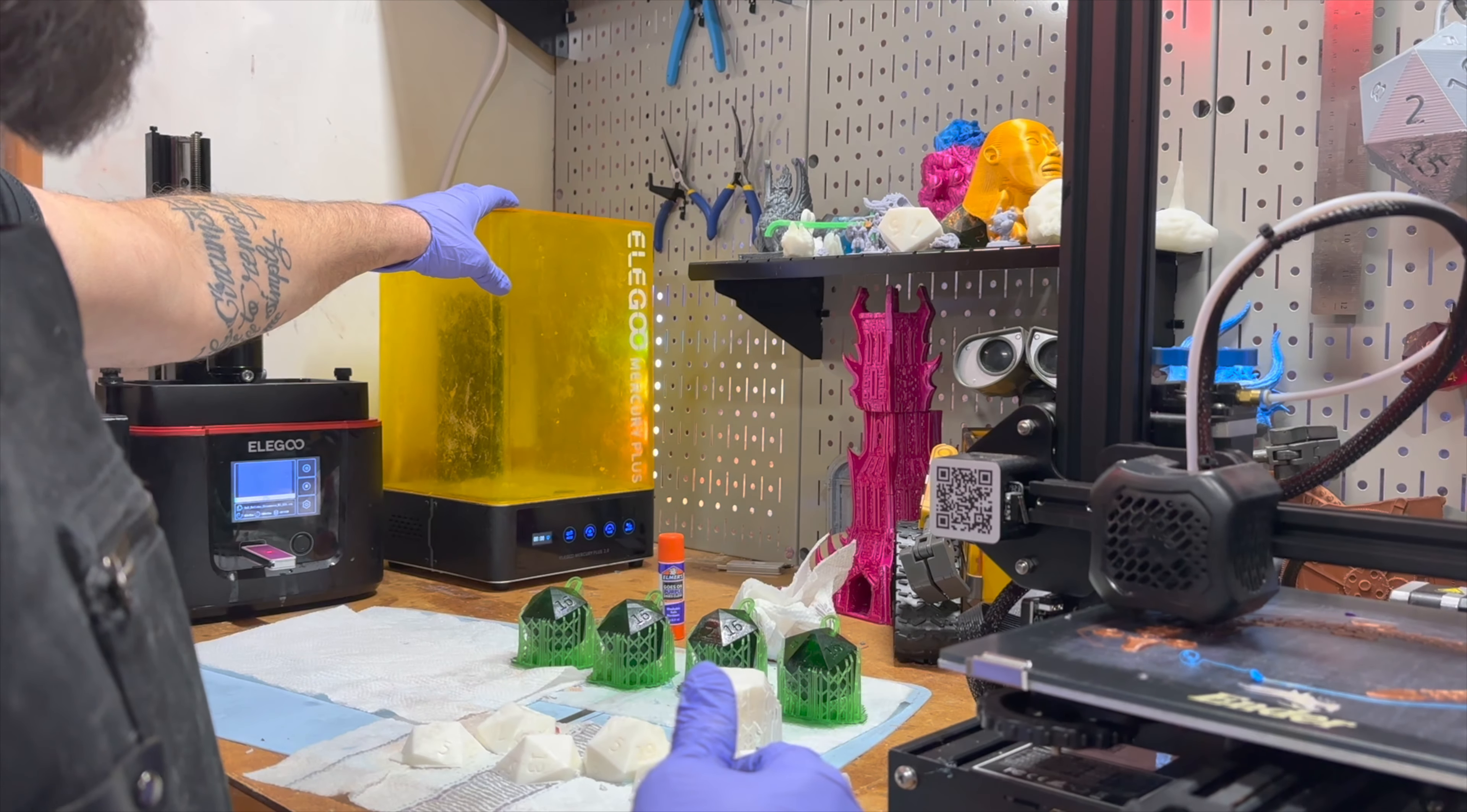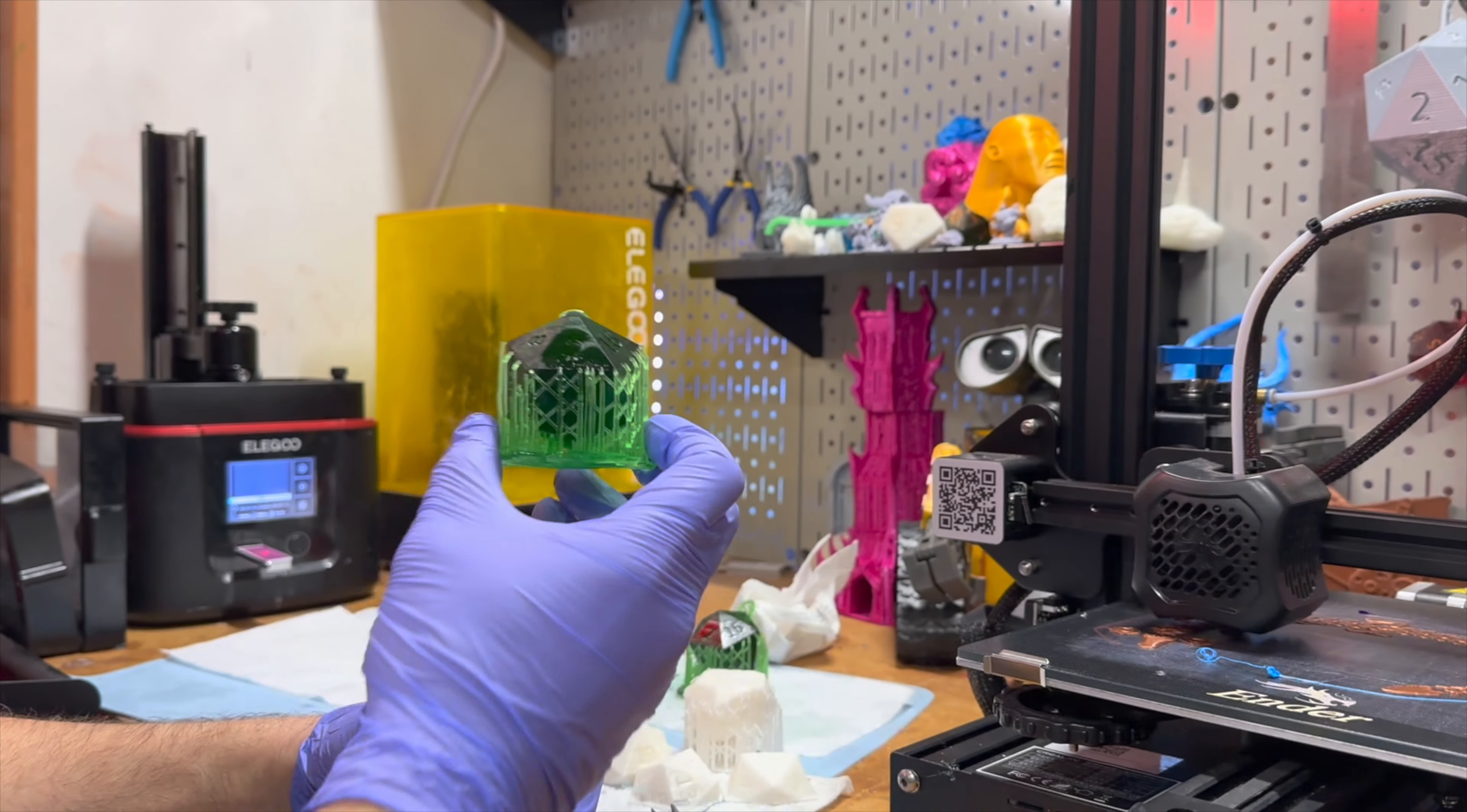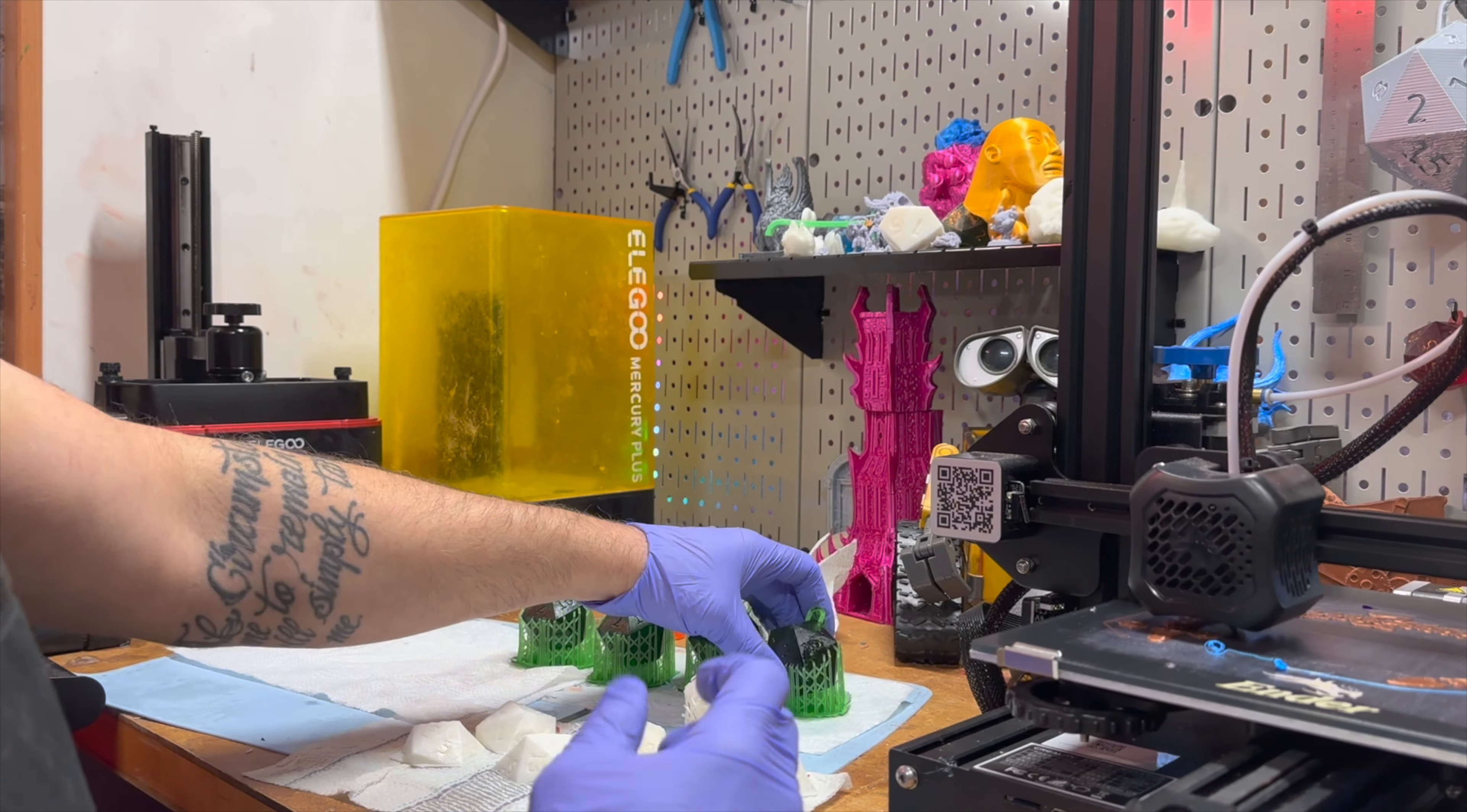So we're going to use the Elegoo Mercury Plus to cure these 3D resin printed dice that we make and I'm going to show you the process.